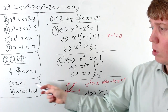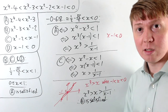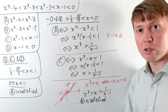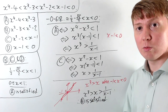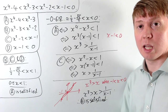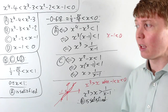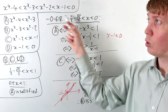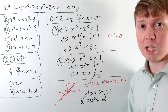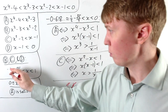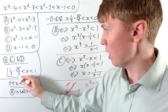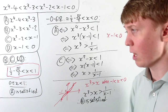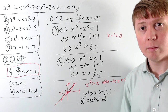So when x is positive we saw that A is satisfied, and when x is negative A is also satisfied — no further restrictions arise from inequality A. Our overall solution, satisfying all four inequalities simultaneously, is that x must be between one half minus root 5 over 2 and 1.